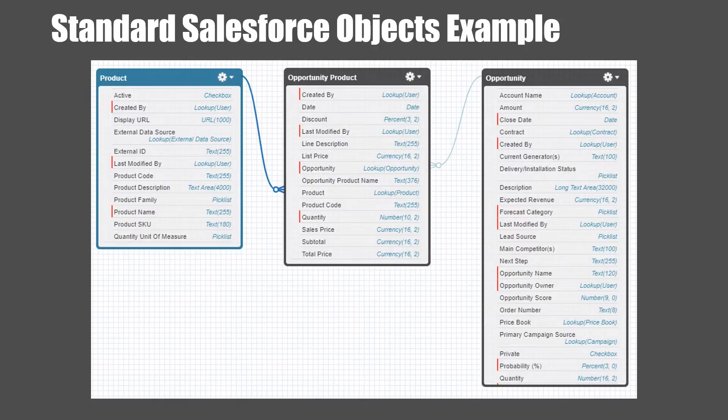Let us look at an example in standard Salesforce objects. A product can be present in many opportunities, and a single opportunity can have multiple products. For this functionality to be made possible, you have to use a junction object.